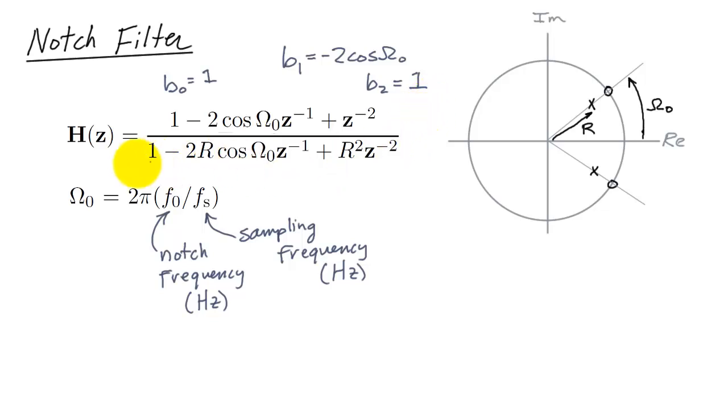And then in the denominator, we have a similar kind of thing, except now the coefficients are denoted A. This would be A0, this expression is A1, and then R squared corresponds to A2.